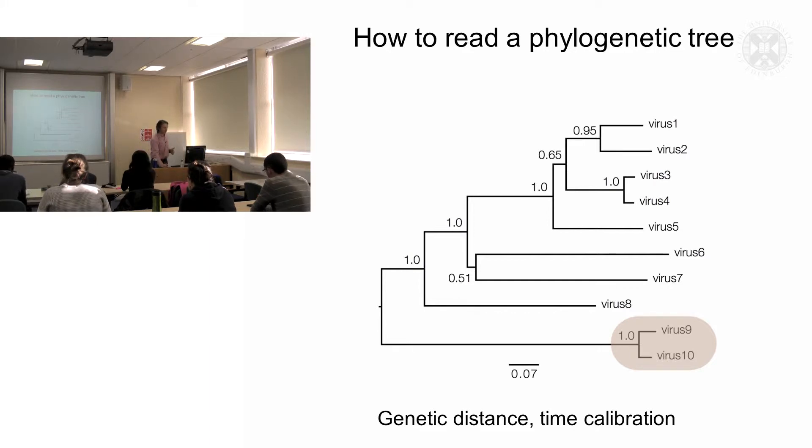And this down here is the key. So 0.07 refers to nucleotides per site in the alignment. That gives a measure of the scale of the genetic distance between each of the virus groups.